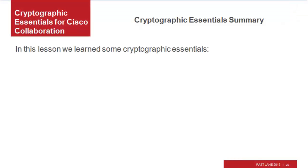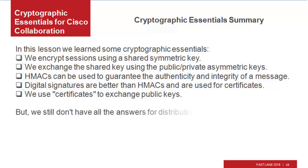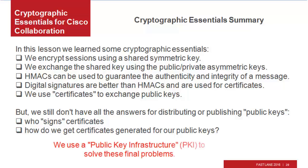In this lesson, we learned some cryptographic essentials. We encrypt sessions using a shared symmetric key — encryption with symmetric keys is fast. We exchange the shared key using public-private asymmetric keys — encryption with asymmetric keys is slow, but the keys are valid for a long time and are easier to manage. HMACs can be used to guarantee the authenticity and integrity of a message. Digital signatures are better than HMACs and are used for certificates. We use certificates to exchange public keys. But we still don't have all the answers for distributing public keys — who signs the certificates, and how do we get certificates if someone else has to sign them? We use a public key infrastructure, PKI, to solve these final problems. That's our next lesson.